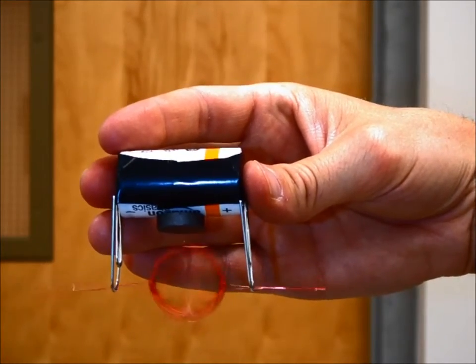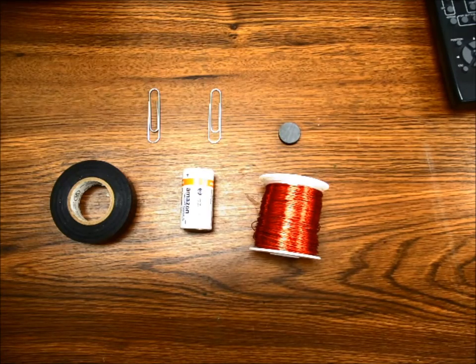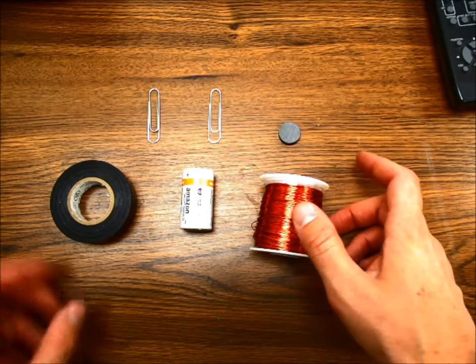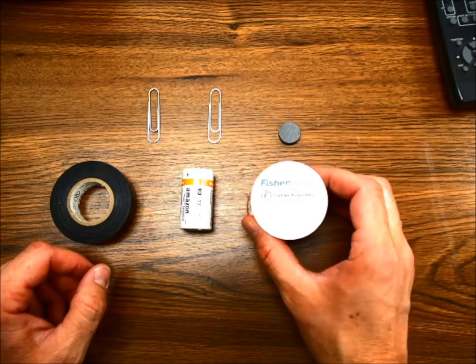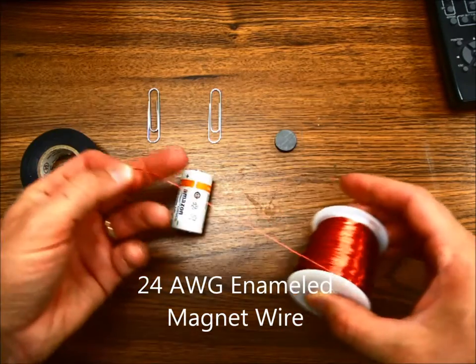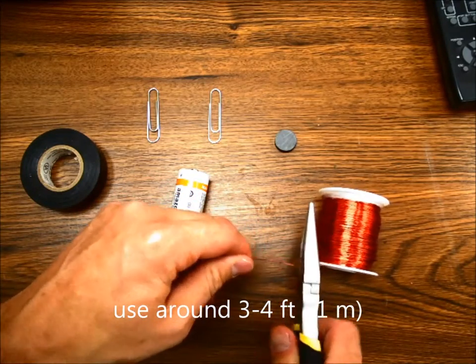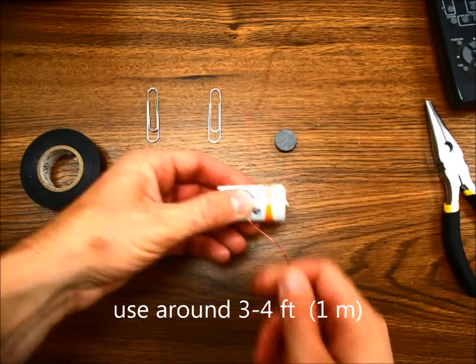The first thing that you're going to need is some kind of a battery. Either a C or D cell usually works best. This one's a C here. You'll need some kind of tape. I like electrical. Some paper clips, a magnet. Neodymium is a little bit better, but any will do. And then magnet wire. And this magnet wire here is 24 gauge. You can use something a little bit smaller or bigger. But you want to get about a meter, three or four feet or so.